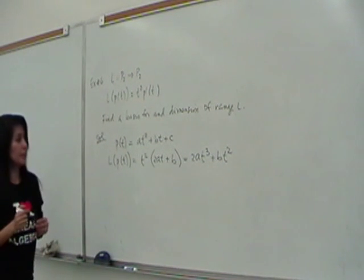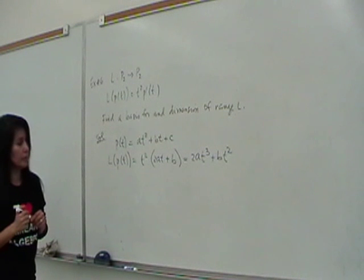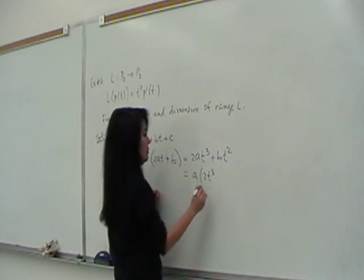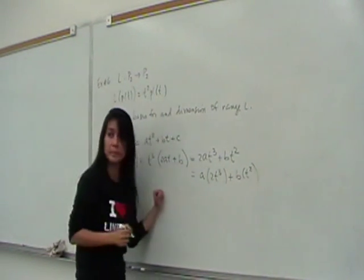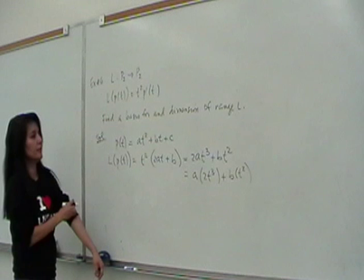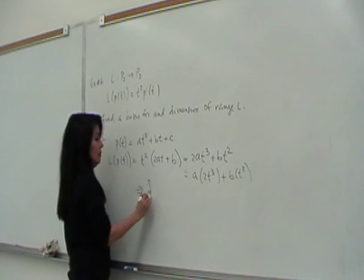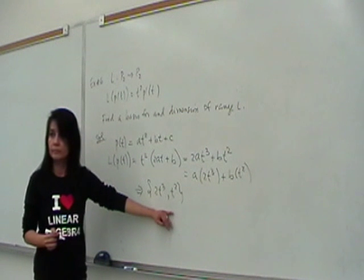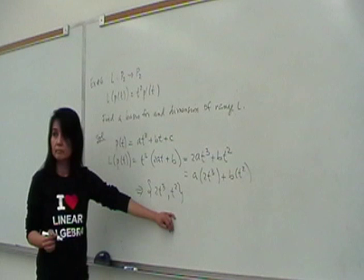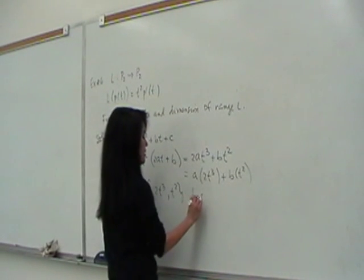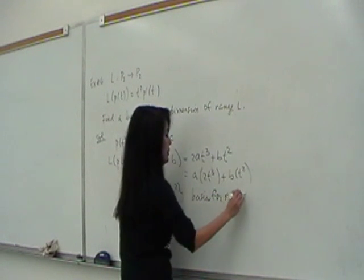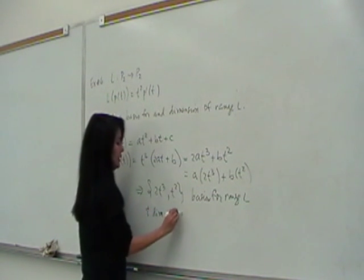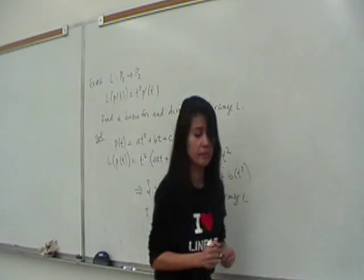It will map it to T squared times the derivative of P of T which is 2AT plus B. Which you can write as 2A T cubed plus BT squared. So this will be an element in the range of L. So can we answer the question? Yes. So this looks like A times 2T cubed plus B times T squared, linear combination. So therefore, what is a basis for the range of L? 2T cubed, T squared. Is that a basis? Are we sure? Are they linearly independent? Yeah. Okay, so this is your basis for range L. And therefore, since there are two elements in the basis, that means the dimension of range L is 2.